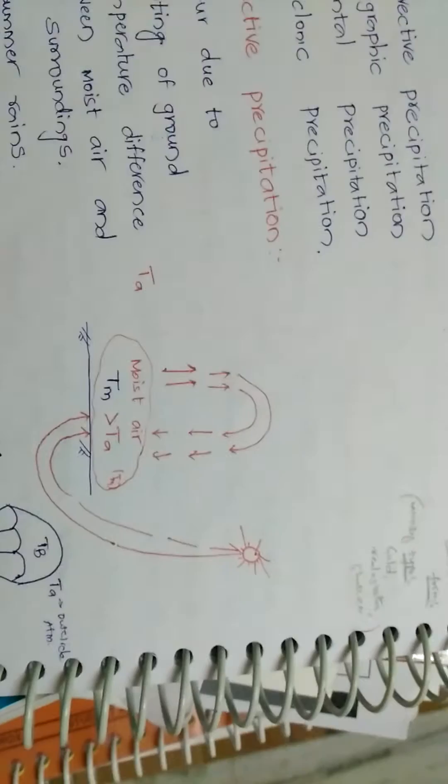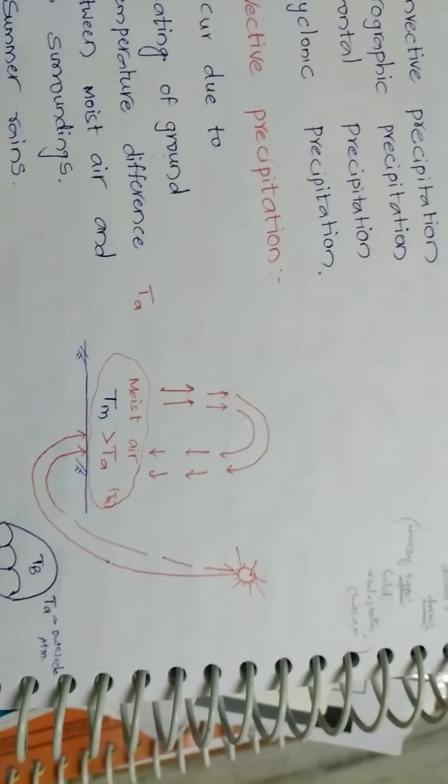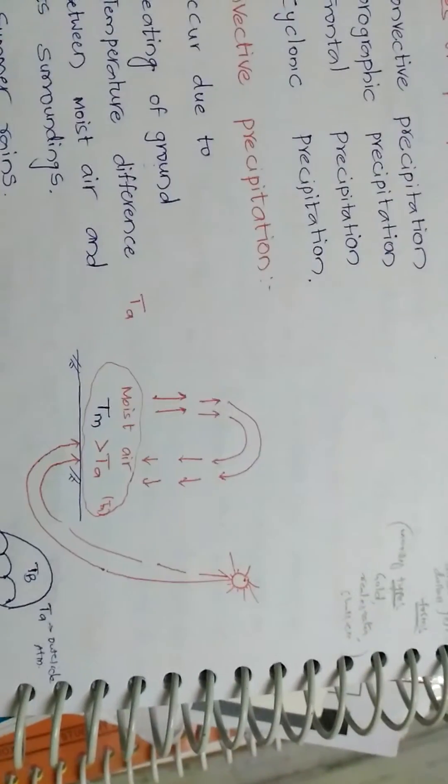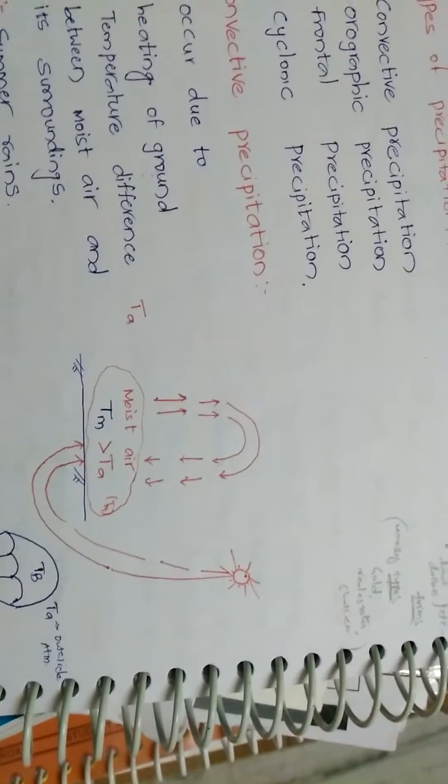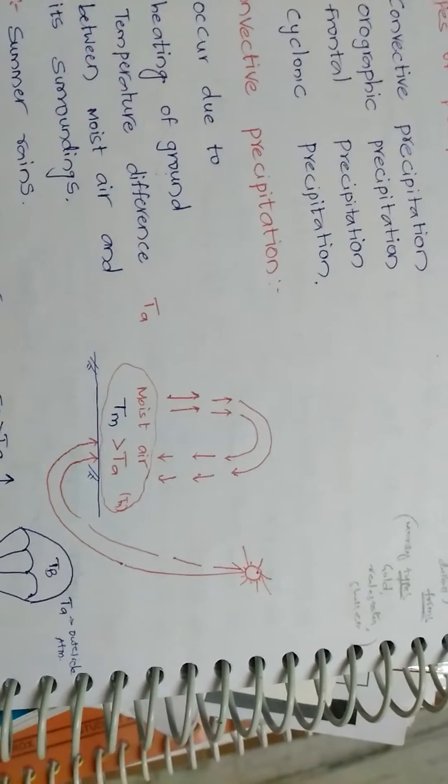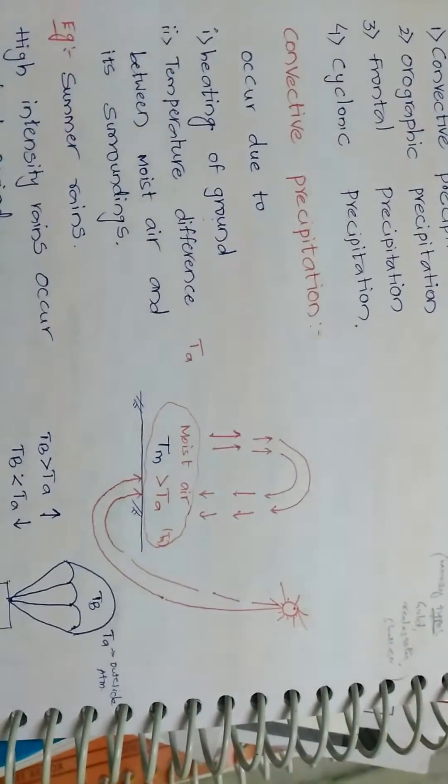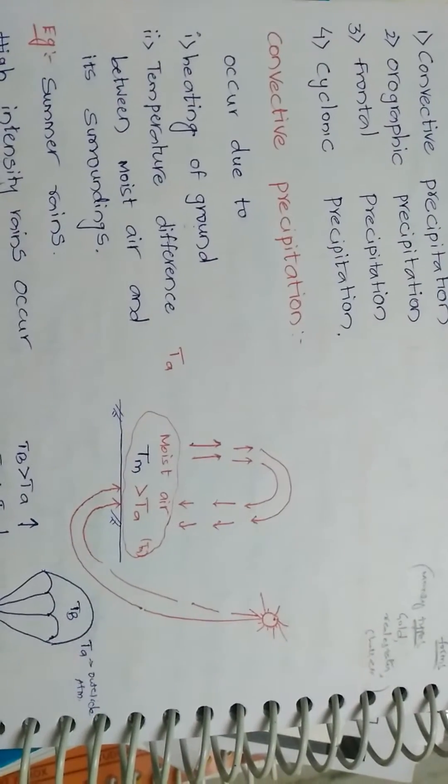This is the figure representing convective precipitation. If we observe the figure, the sun heats the ground and the temperature rises and the difference in the temperature gives us the convective precipitation as rainfall.